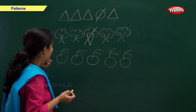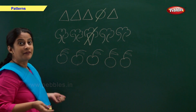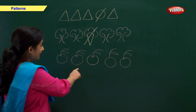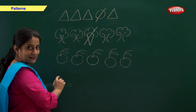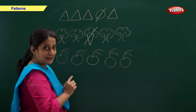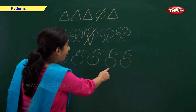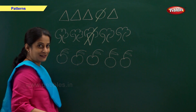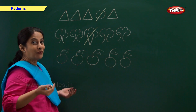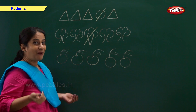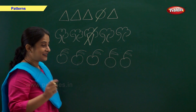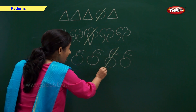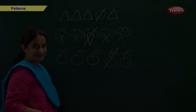And in this group we have apple, apple, apple, apple, orange, apple. So which figure is the odd one? Orange. Orange is the odd one out.